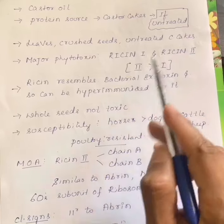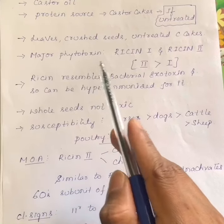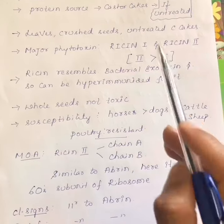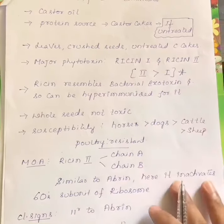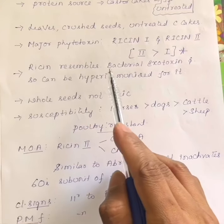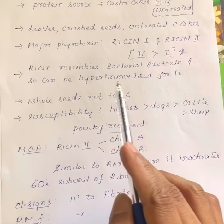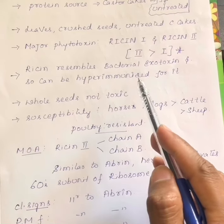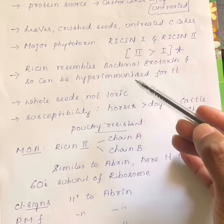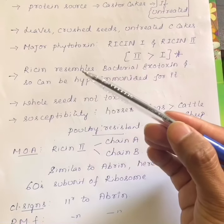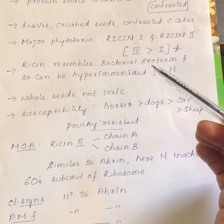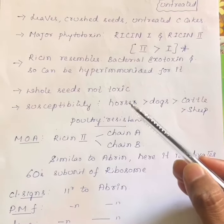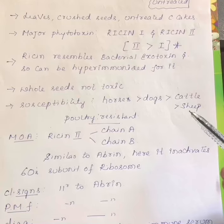The major phytotoxins present in castor bean are ricin-1 and ricin-2. Ricin-2 is more toxic than ricin-1 — this is the important point. Ricin resembles bacterial exotoxin, meaning you can hyper-immunize against it. Just as you can prepare a hyper-immune serum against bacterial exotoxin, similarly you can prepare a hyper-immune serum against ricin toxin. Abrin resembles viper snake venom, whereas ricin resembles bacterial exotoxin. Here also, whole seeds are not toxic — only crushed or broken seeds are toxic.